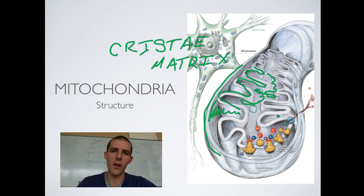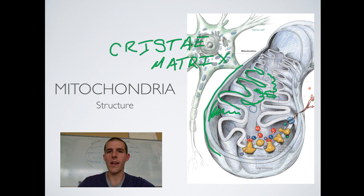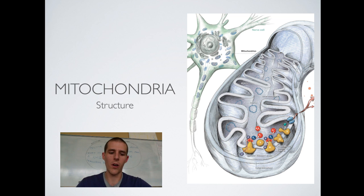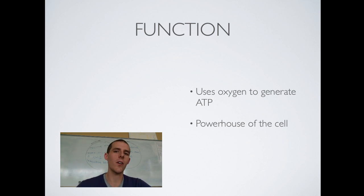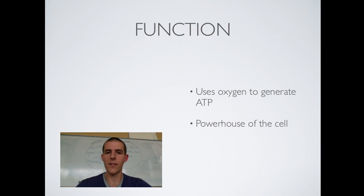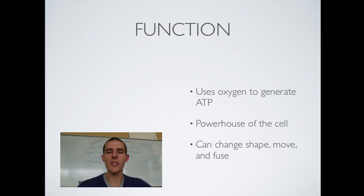Cellular respiration, or the production of ATP, happens in the inner membrane — the cristae. It is beneficial for this membrane to be all folded up because that increases its surface area, which means it can have more machinery for making ATP. With regard to function, mitochondria use oxygen to generate ATP, and they are known as the powerhouse of the cell. ATP is the energy currency in our bodies — everything you eat eventually gets broken down to produce ATP, which your body uses to carry out daily functions. These organelles also have the ability to change shape, move, and fuse together, which is another reason they're different from other organelles.